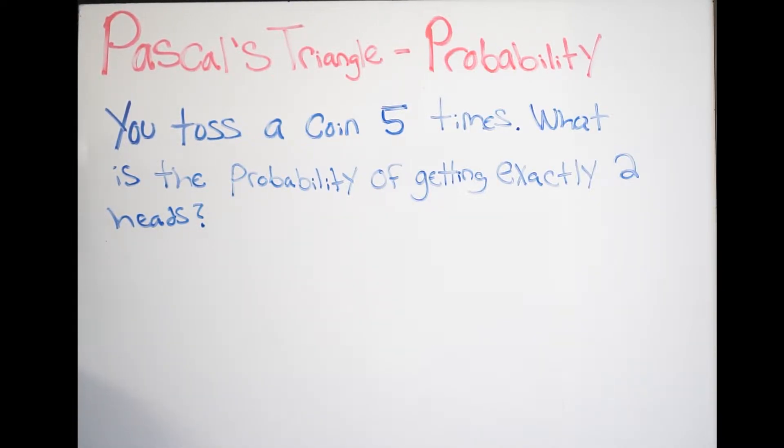So, the first step you want to do is go ahead and write out Pascal's triangle. So, what I'm going to do is I'm going to write it out so that my diagonal goes up to five, because that's going to be my total.